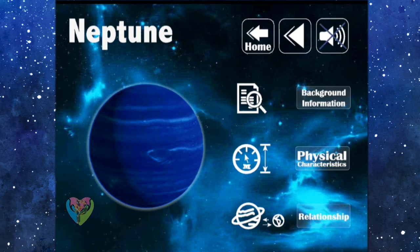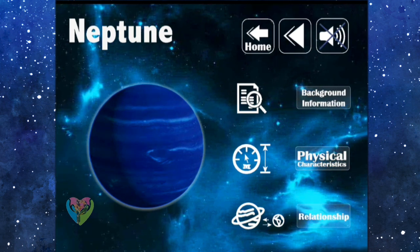The relationship of the solar system refers to the orbital distance, mass, and size comparison.